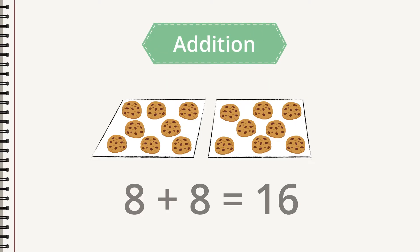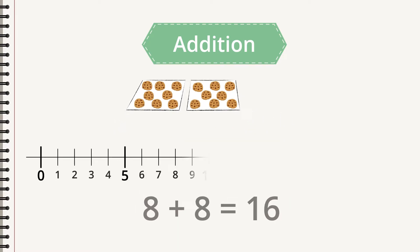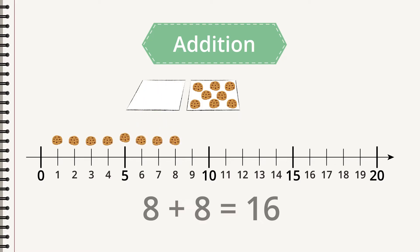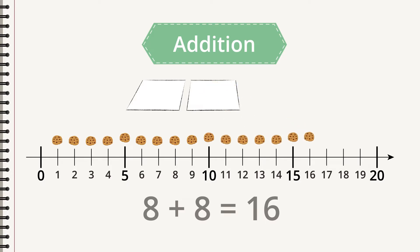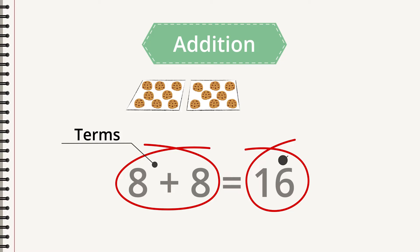You add, reckon up, total, sum. Another way of looking at it is to study the number line. When you add, you go to the right on the number line. If you have eight cookies to begin with, you start at the eight on the number line. If you add eight more cookies, move eight steps to the right and land on sixteen. This is addition. The numbers you use to calculate are called terms, and the result is a sum.